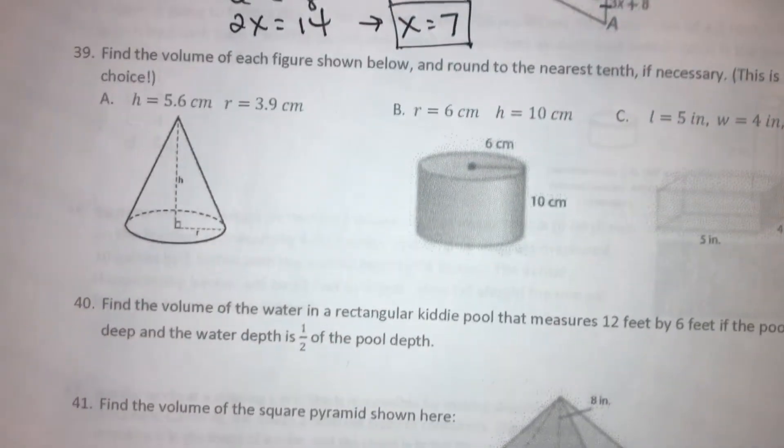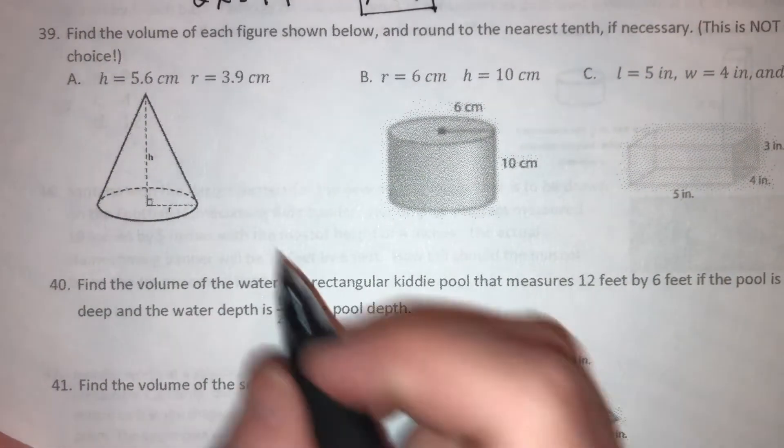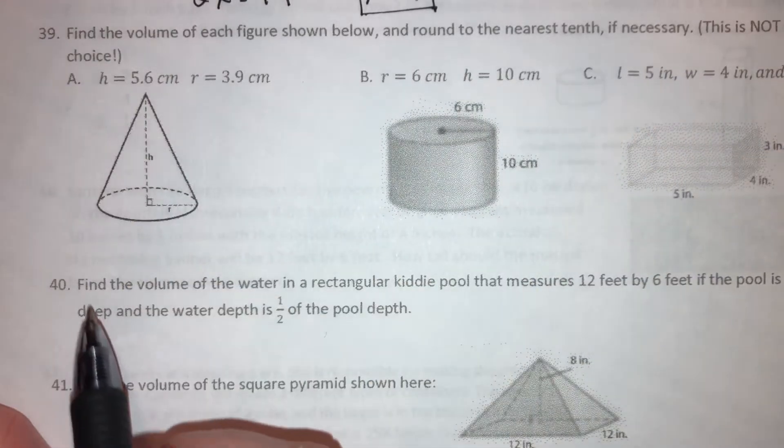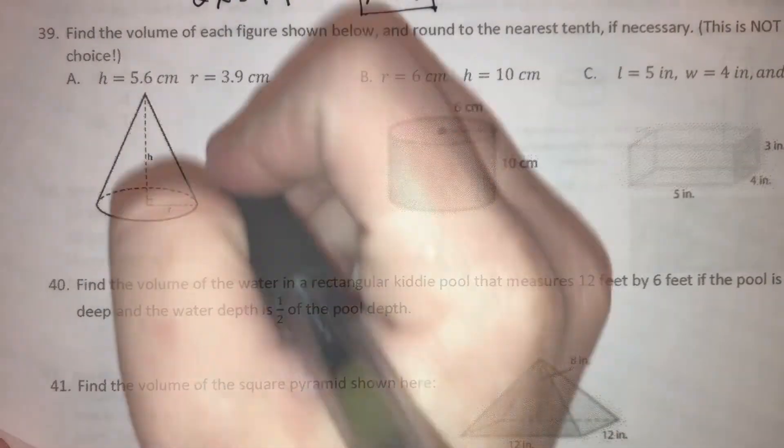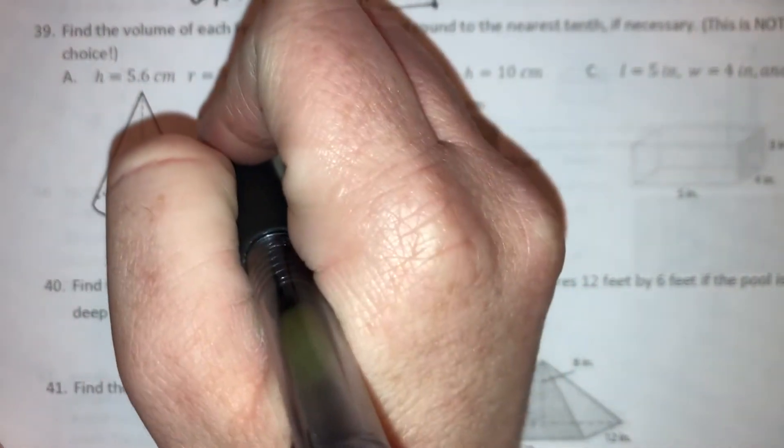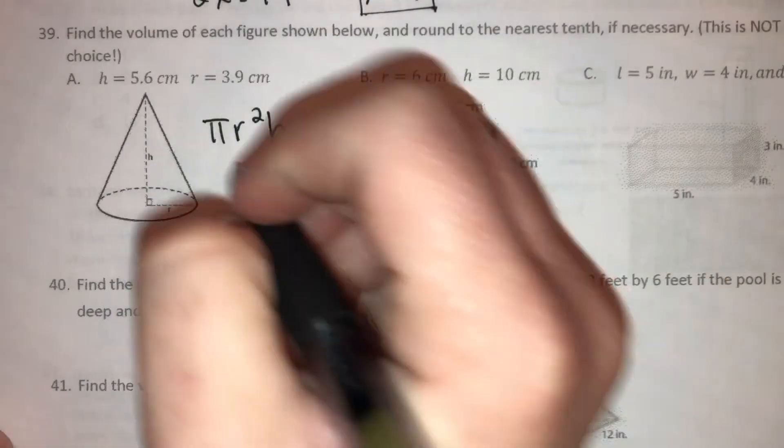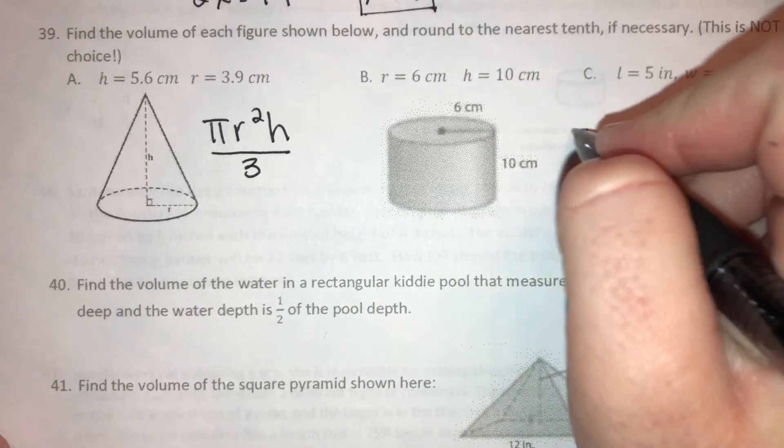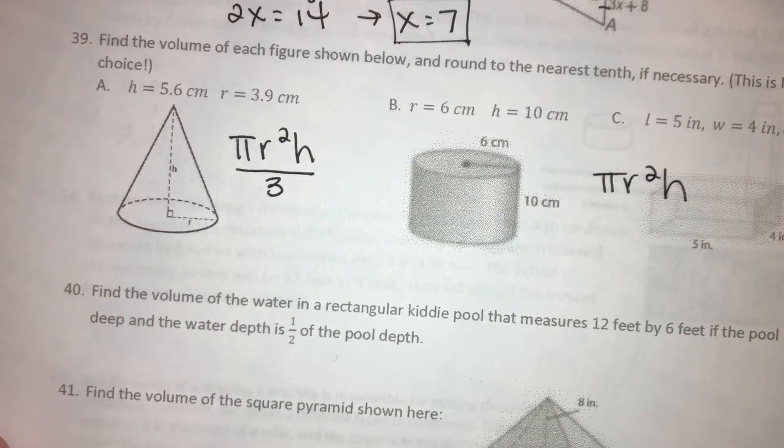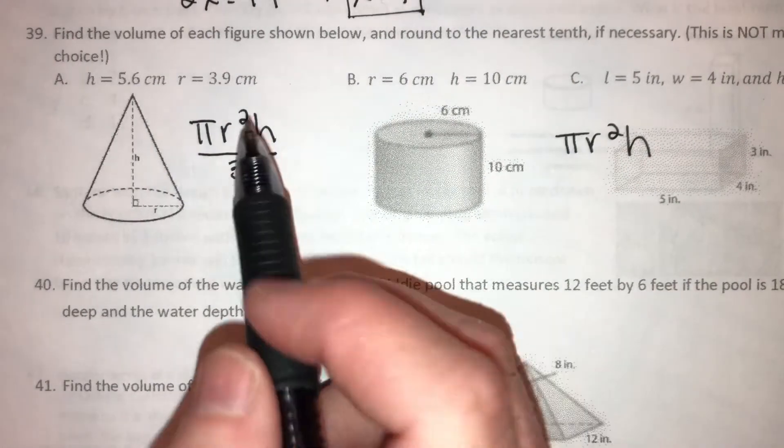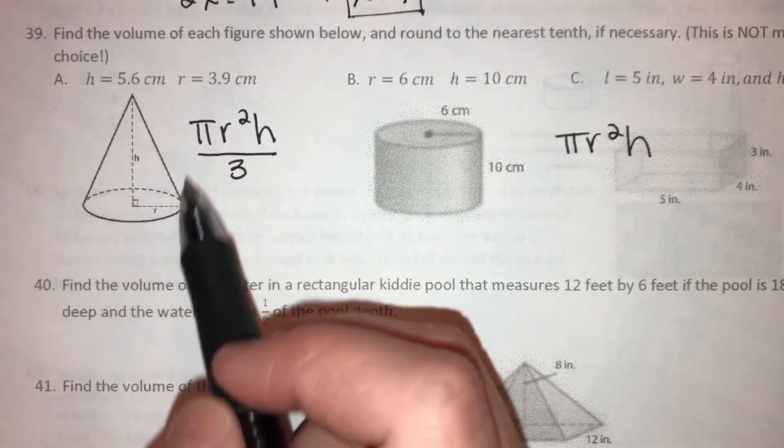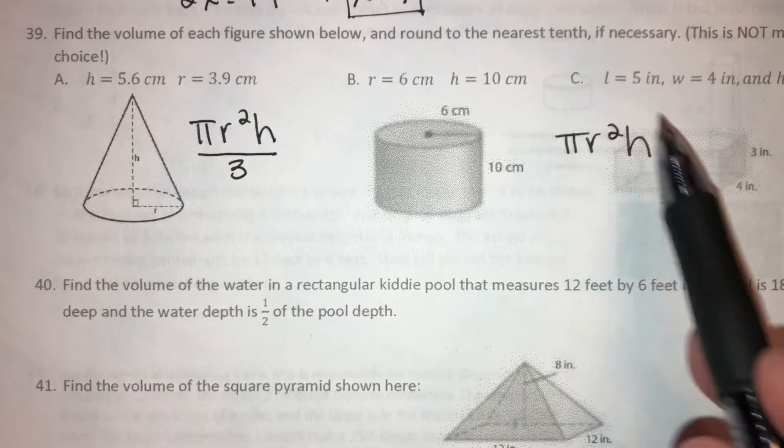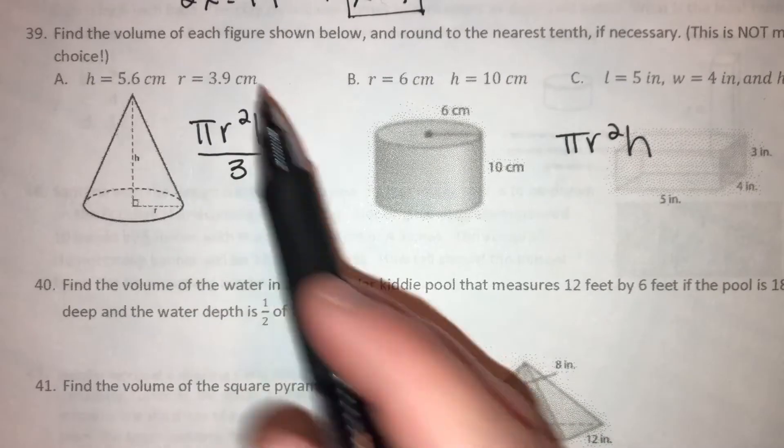Okay, number 39. Sorry, it's my dog. Number 39, find the volume of each figure shown below and round to the nearest tenth, if necessary, it's not multiple choice. All right, so volume for a cone is pi times the radius squared times the height, all divided by 3. Volume of a cylinder is pi times the radius squared times the height, not divided by 3. I don't know what three is, why it's a magical number, but the only difference between the volume of a cone and the volume of a cylinder is that we take a third of it for the cone. We just leave it for the cylinder.